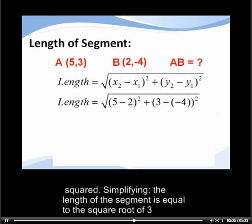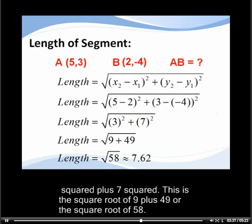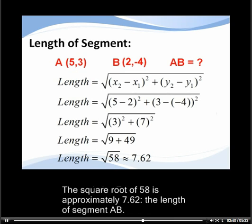Simplifying, the length of the segment is equal to the square root of 3² plus 7². This is the square root of 9 plus 49 or the square root of 58. The square root of 58 is approximately 7.62, the length of segment AB.